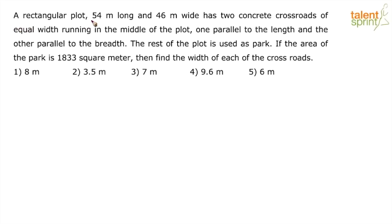A rectangular plot 54 meters long and 46 meters wide has two concrete crossroads of equal width running in the middle of the plot — one parallel to the length and the other parallel to the breadth. The rest of the plot is used as a park. If the area of the park is 1833 square meters, find the width of each of the crossroads.